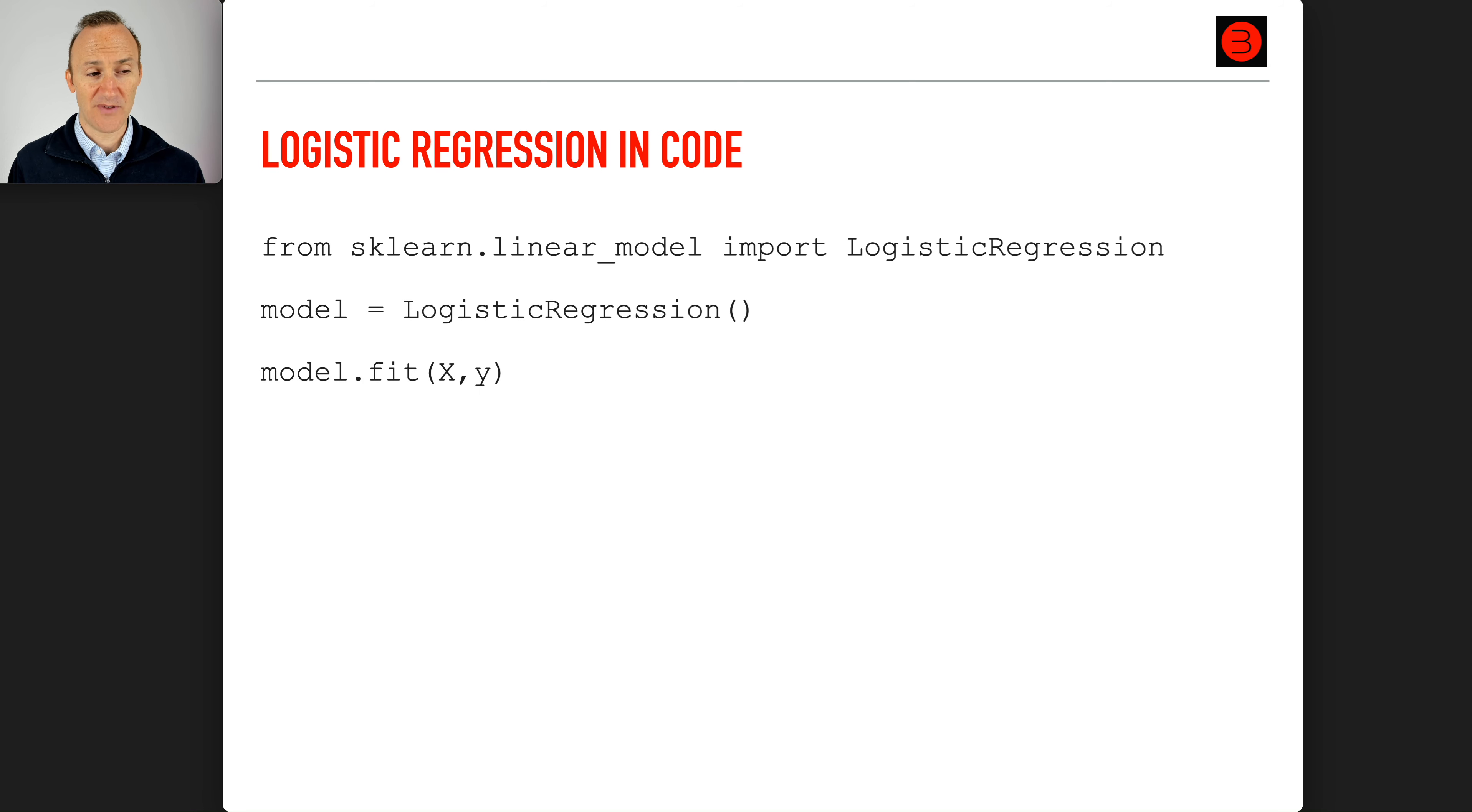model.fit the data on X and y, and then score the data: model.score parentheses X comma y. Then you can bring in new data to make your predictions. The steps are basically the same as linear regression. It's a different model, LogisticRegression, and most significantly, the score is done differently because it is a classifier, not a regressor.